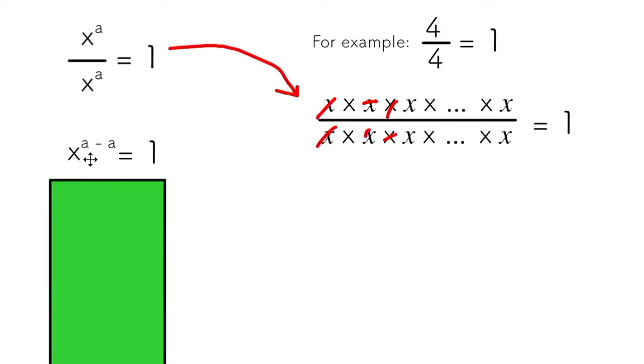Now, this is where it gets interesting, because I think we can all agree that a minus a is 0. So what I end up with is x to the power of 0. I know that x to the power of 0 is 1 because I've just shown you that x to the power of a over x to the power of a is equal to 1. Therefore, I can conclude that any base to the power of 0 is in fact 1.